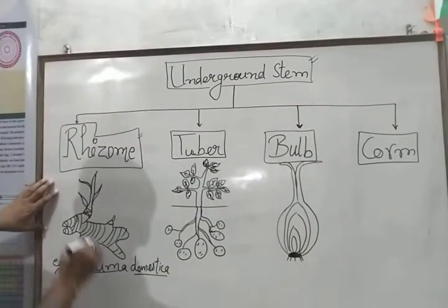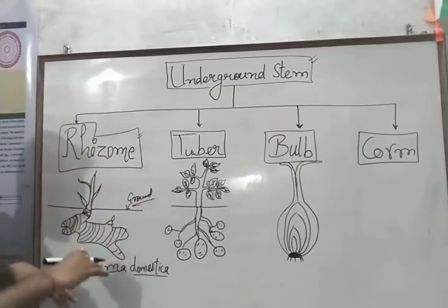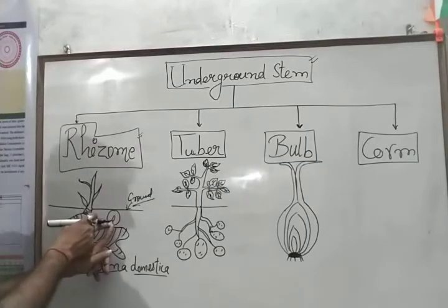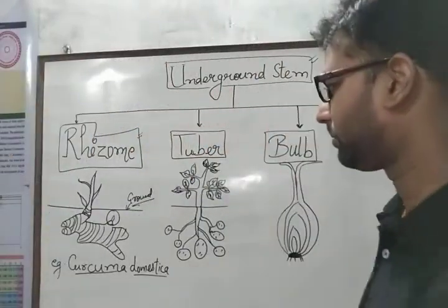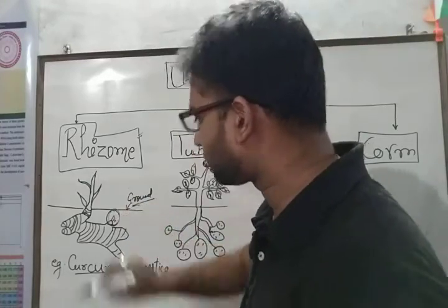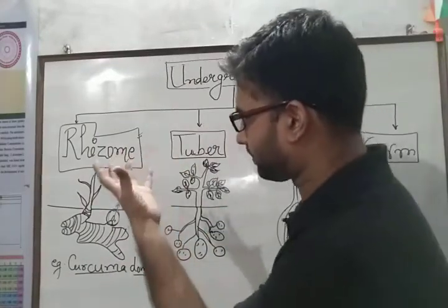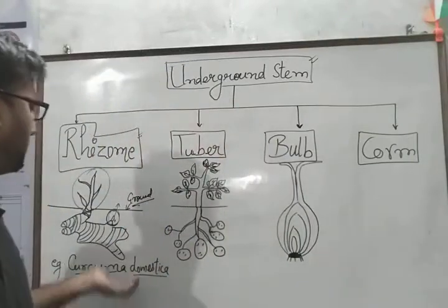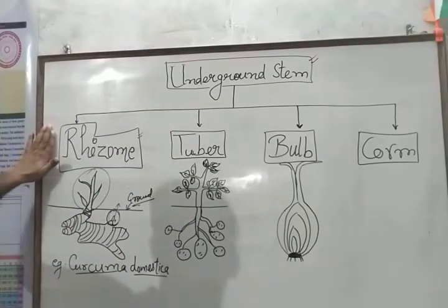These rhizomes are underground stems. Here at ground level you can see nodes and inter-nodes — the distance between two nodes is the inter-node, confirming that it is a stem because nodes and inter-nodes are present. At each node, a small structure appears and on getting favorable conditions, it grows. When ripened and mature, another plant grows from it. Like in banana, this is a very common method used by farmers. So, this is called rhizome.